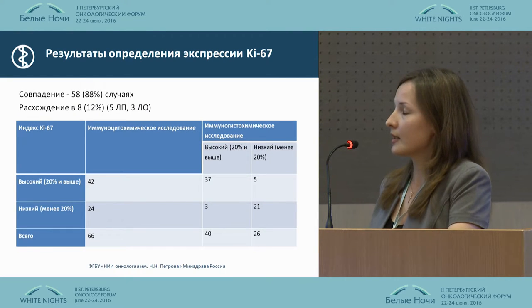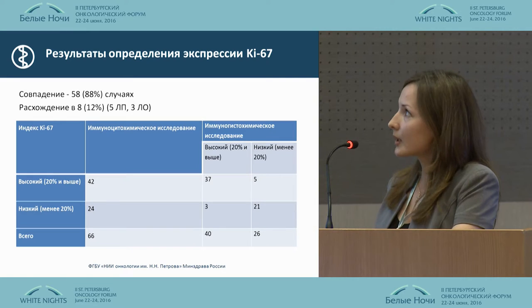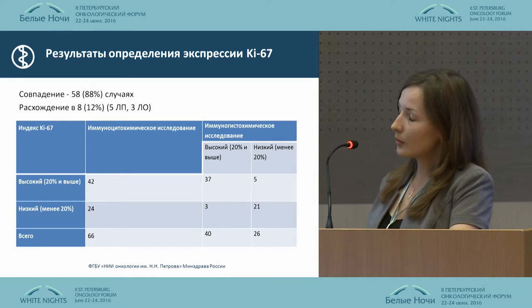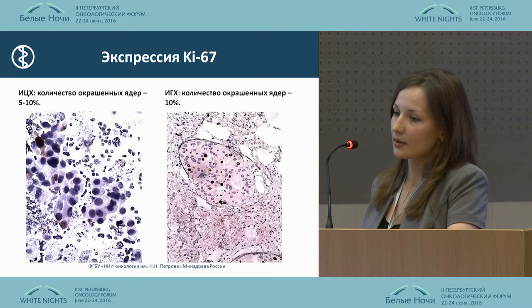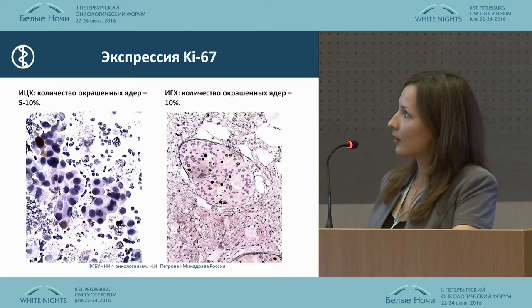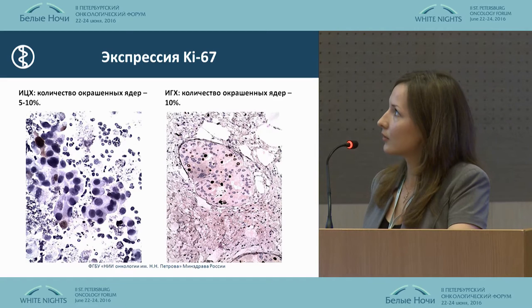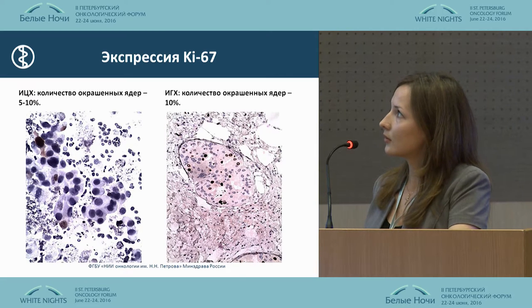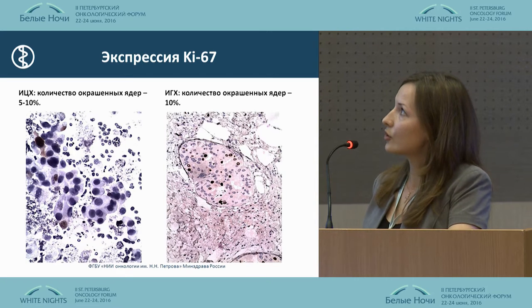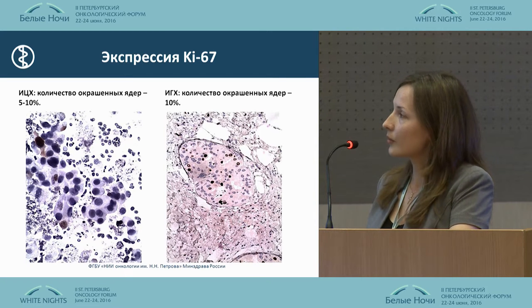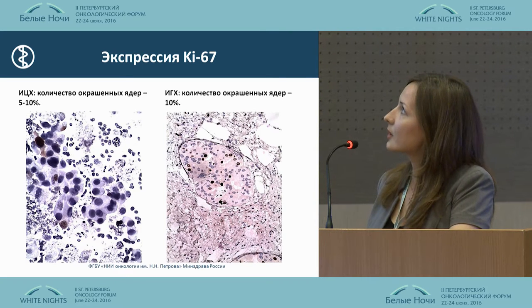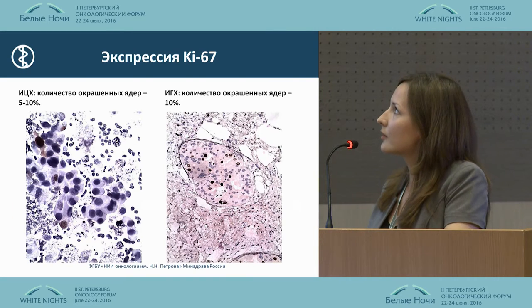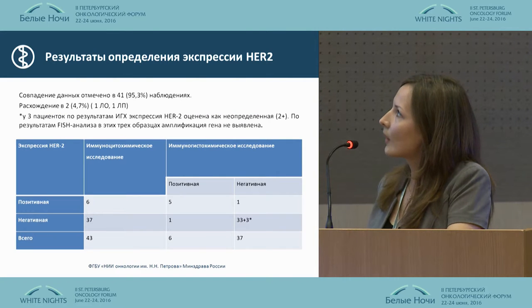For Ki-67, the coincidence is 88% and the deviation is 12%. Here we can see the number of nuclei that have been stained.